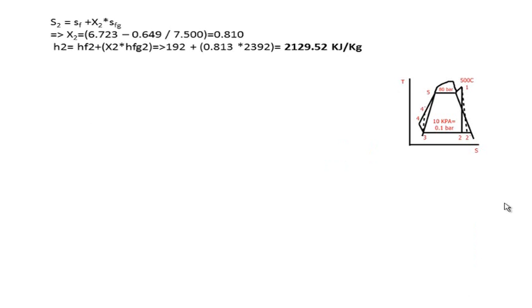We have to use the equation S equals SF plus X times SFG to find first the dryness fraction, or the quality of the steam, ideally leaving the turbine. It would be 0.81, which means 81% quality.